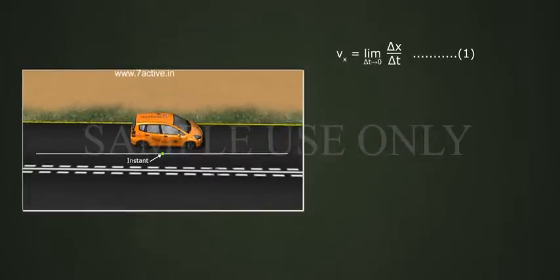Vx equals to limit delta t tends to zero, delta x by delta t.